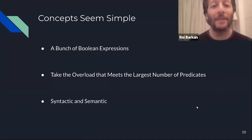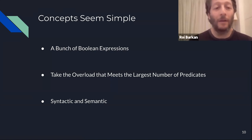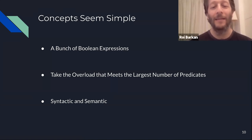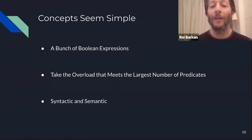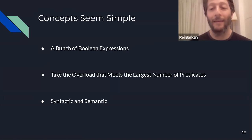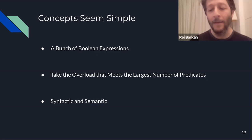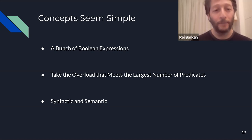To summarize this introduction: concepts are mainly three things. They are a bunch of Boolean expressions, as Stroustrup told us. We use them to choose the overload that meets the largest number of predicates — the one that is both true and has the largest number is the best pick. And every concept is not just syntax, it's also semantics.